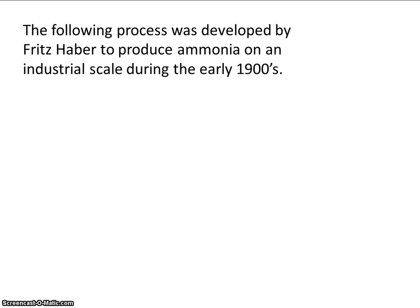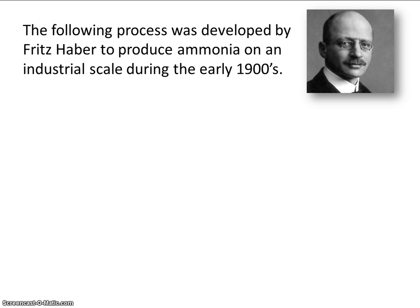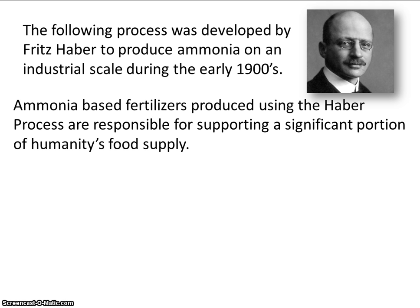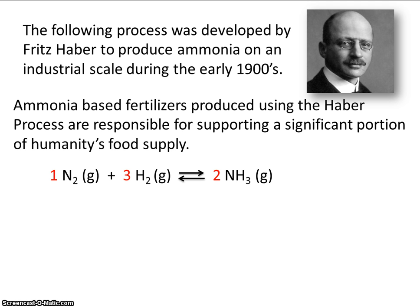The following process was developed by Fritz Haber to produce ammonia on an industrial scale during the 1900s. Ammonia-based fertilizers produced using the Haber process are responsible for supporting a significant portion of humanity's food supply. In fact, Fritz Haber later won a Nobel Prize for his work on this reaction. So if one were to mix nitrogen and hydrogen under the right conditions, they would react to produce ammonia, which can be used as a fertilizer.